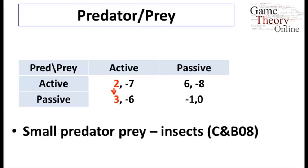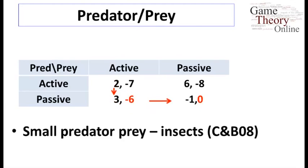Let's see if we could find an equilibrium where the Predator is passive. If we try to check whether this entry is in equilibrium, we're going to have some difficulties. Because if the Predator was actually passive, then the prey gets minus 6 in one case and 0 in the other. So they would prefer to move — if the Predator is passive, then the prey would prefer to be passive too, saving calories by being passive when dealing with passive Predators.